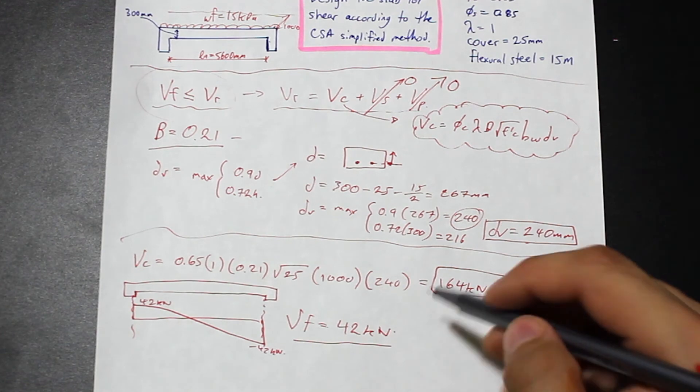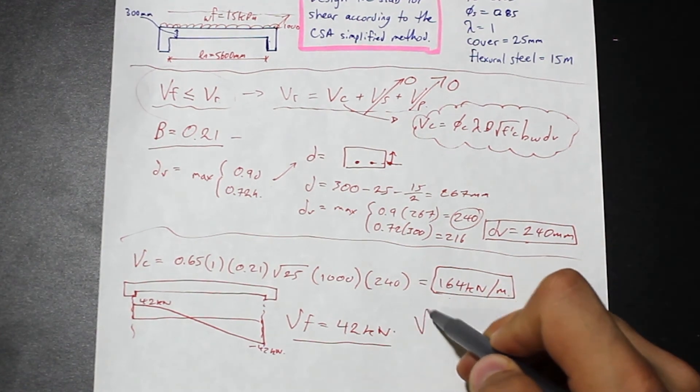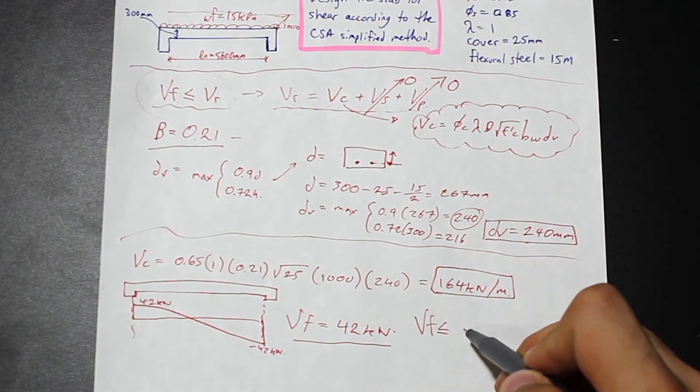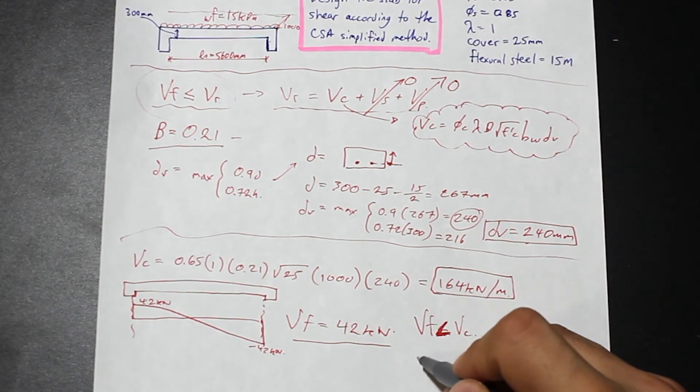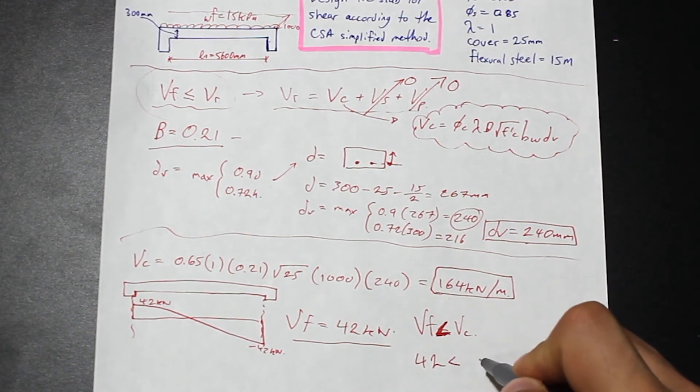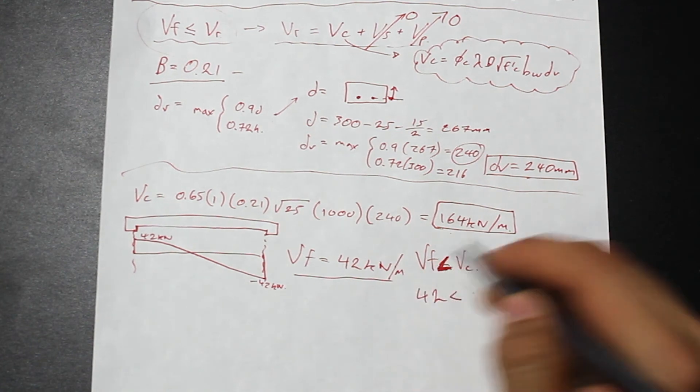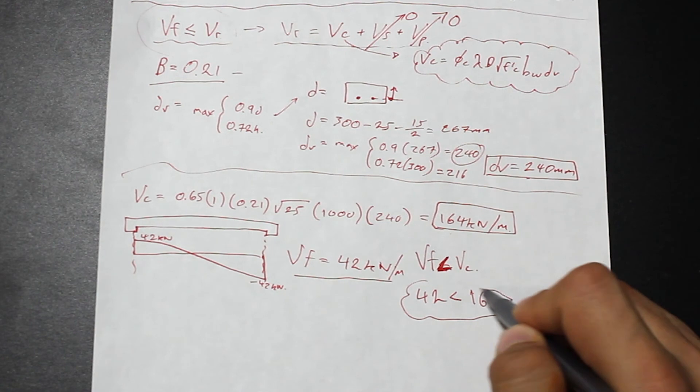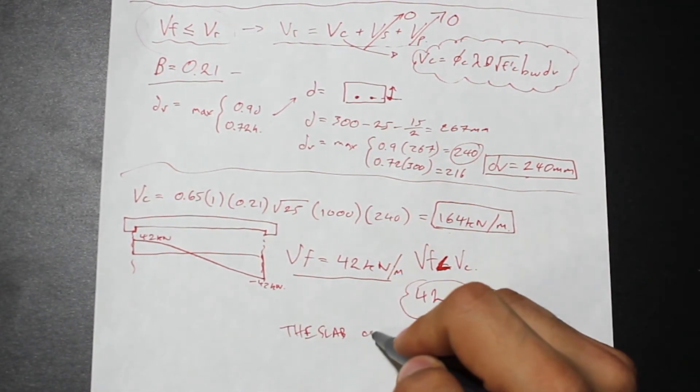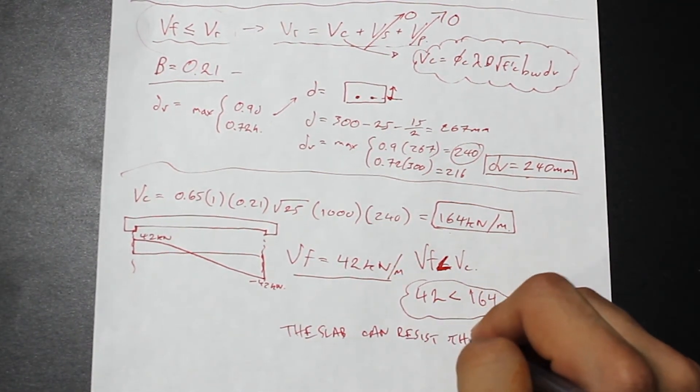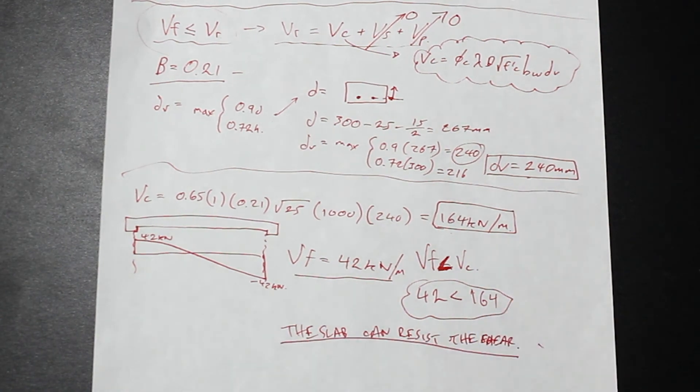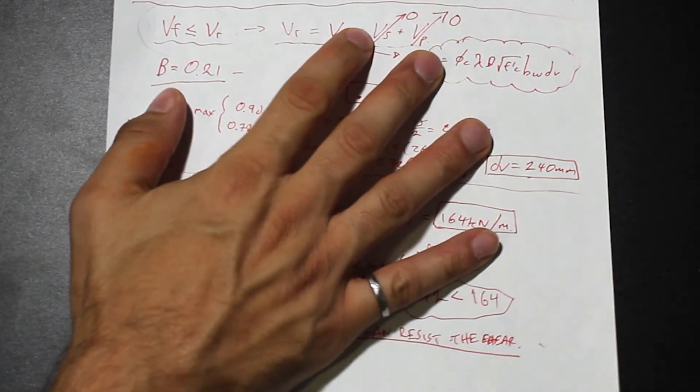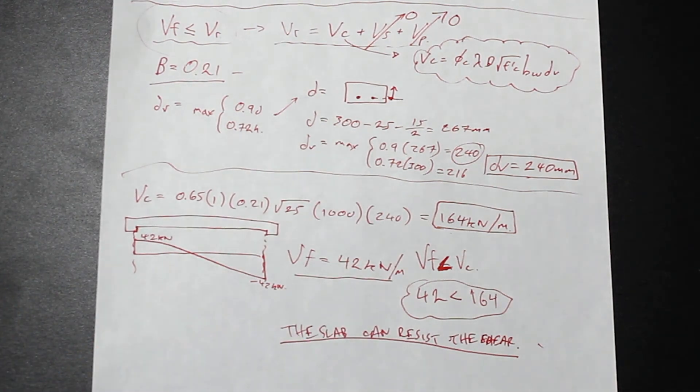Finally, we compare. We compare if VF is less than or equal to VC, which is VR. We have that 42 is less than 164 per meter. So we can say that the slab can resist the shear force. That's that. We'll do a more complicated member where we bring VS into play, which is much more difficult. Maybe we can do that in a beam and we'll design the stirrups and that kind of thing in the next video.